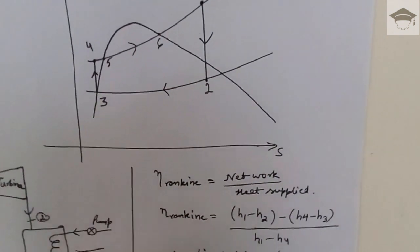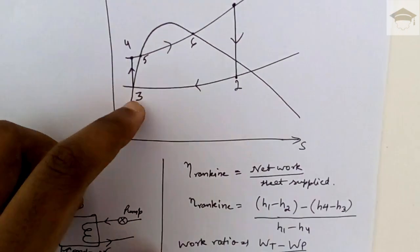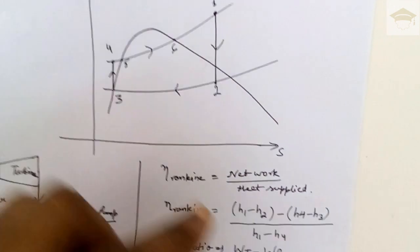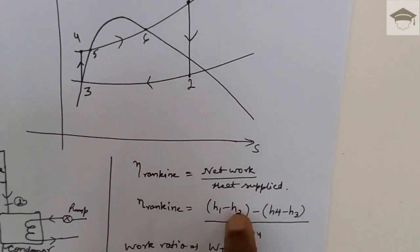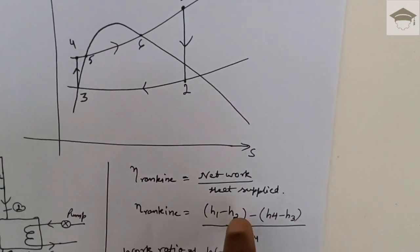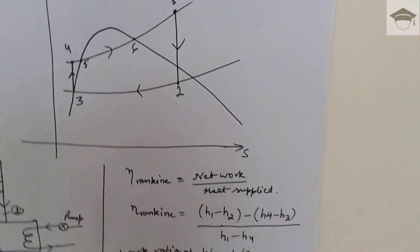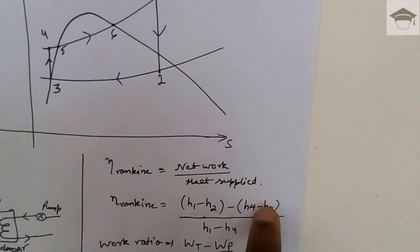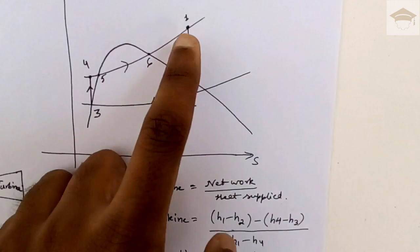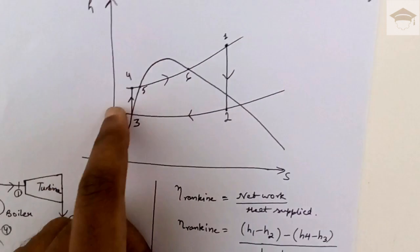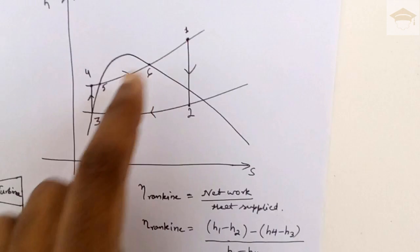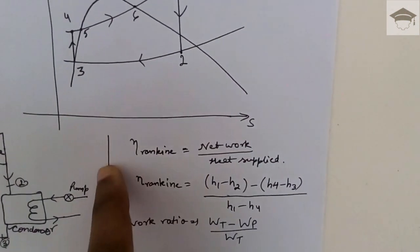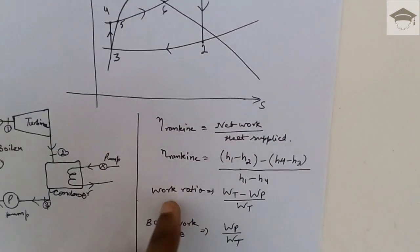The net work (turbine minus pump) is divided by the heat supplied in the boiler. Heat supplied at constant pressure from four to one is h1 minus h4. This gives the Rankine cycle efficiency. The work ratio is net work divided by turbine work — that is (turbine work minus pump work) divided by turbine work. Also, the back work ratio is the pump work divided by the turbine work.